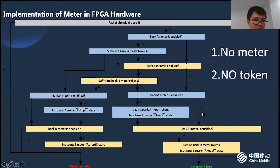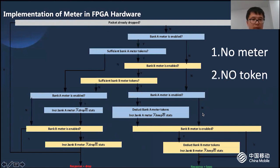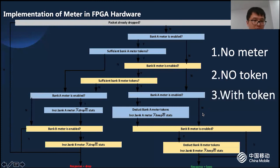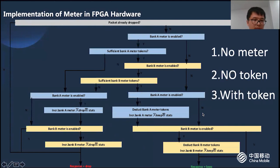Situation two: there is a Meter configured, but not enough tokens in the token bucket. It means there's too much traffic to handle, so the excess traffic will be dropped and the drop stats will increase. Bank A Meter is enabled? Yes. Sufficient Bank A Meter tokens? No. Check Bank A Meter is enabled? Yes. Increase Bank A Meter drop stats and the response is dropped. Situation three: Meter and tokens are both available. The packets will pass and tokens in the bucket will be deducted. The acceptable traffic will increase the keep stats. Bank A Meter is enabled? Yes. Sufficient Bank A Meter tokens? Yes. Check Bank A Meter is enabled? Yes. Deduct Bank A Meter tokens and increase Bank A Meter keep stats. The response is kept.